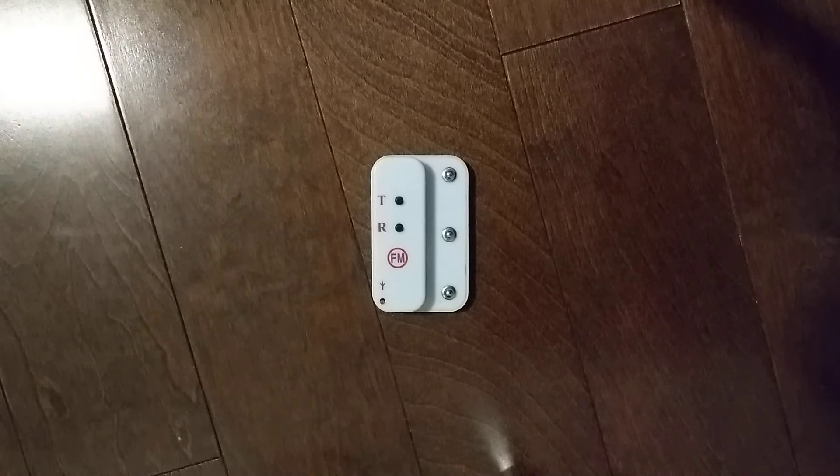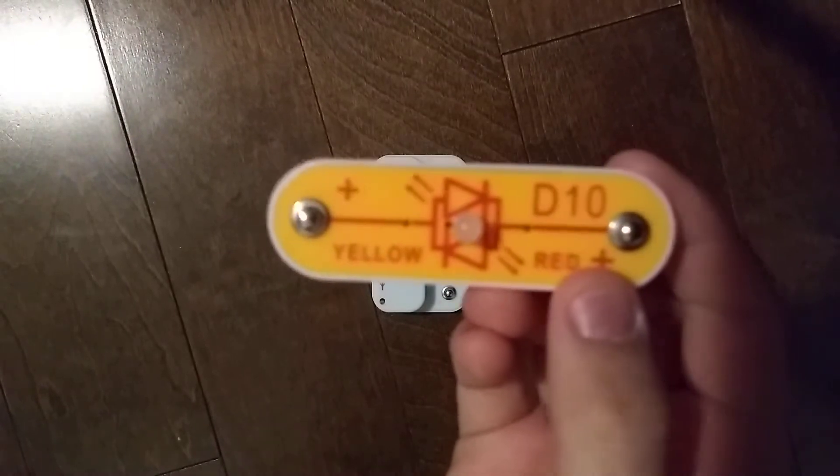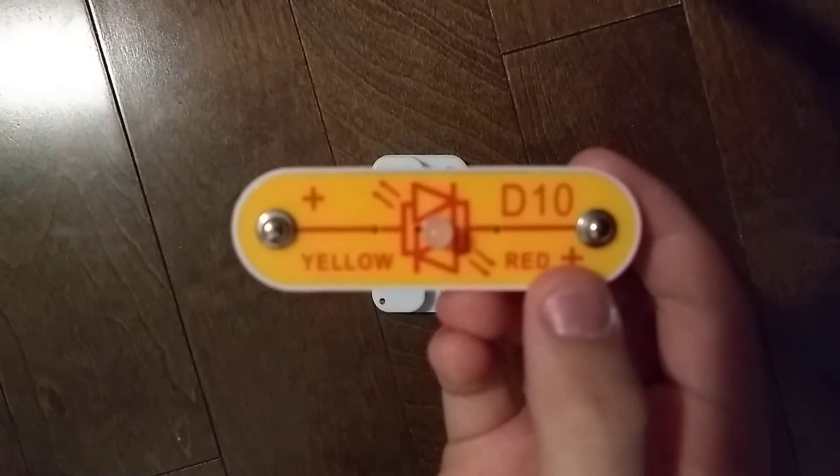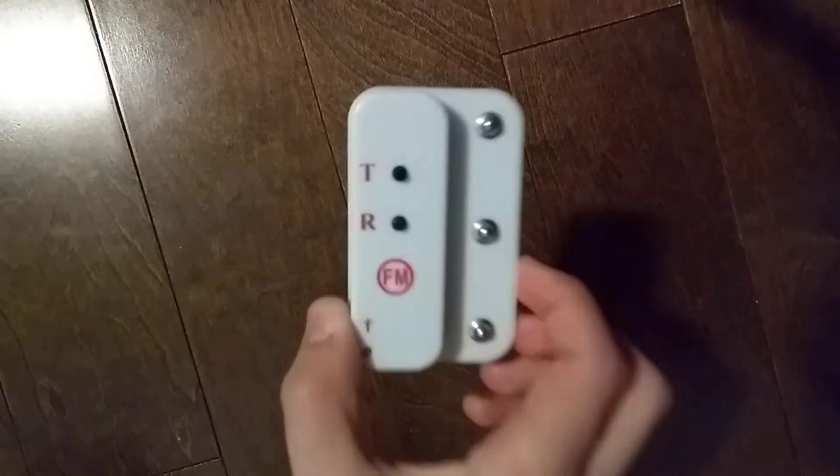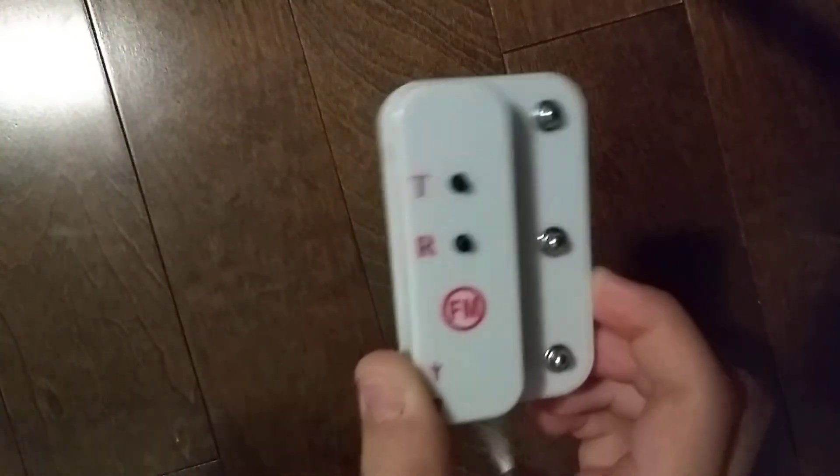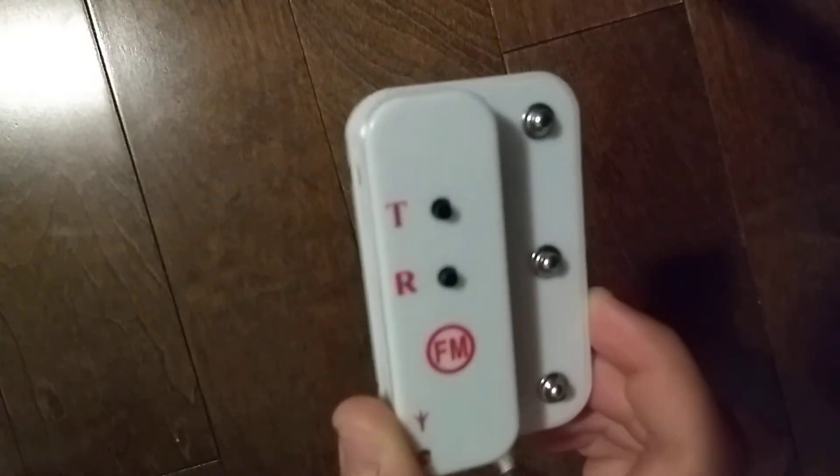Hey guys and welcome to another snap circuits parts video. In the previous video we did the D10 yellow/red light emitting diode. Today we are going to do the FM module.